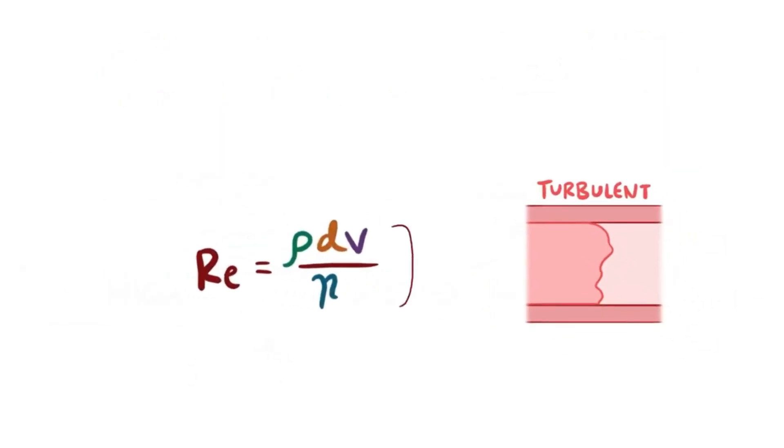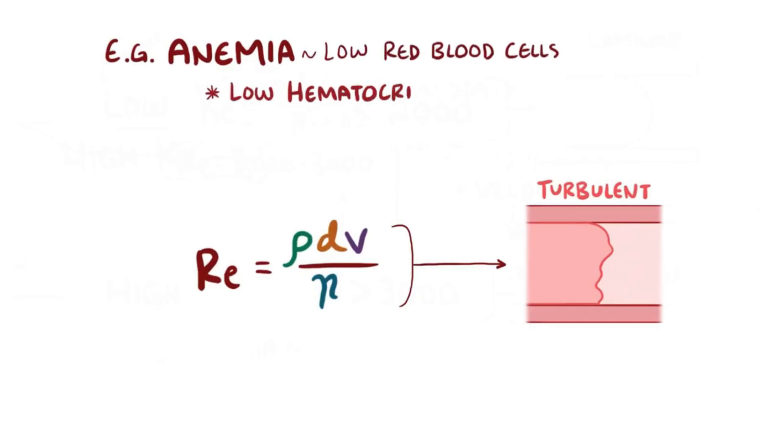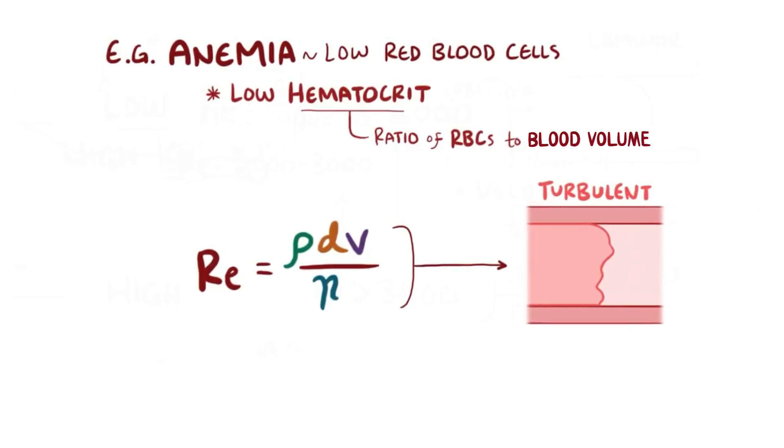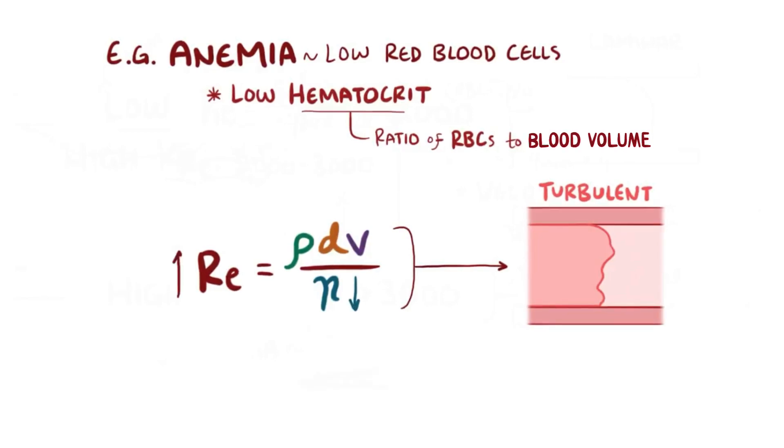As a real life example of turbulent blood flow, a person with anemia has a low red blood cell count, and in general has a lower hematocrit, which is the ratio of the volume of red blood cells to the total blood volume. This essentially means that the blood's less thick, or viscous. Based on the equation, if viscosity decreases, that means Reynolds number increases. Also, these individuals often have an increased cardiac output, which means increased blood velocity and therefore increased Reynolds number.